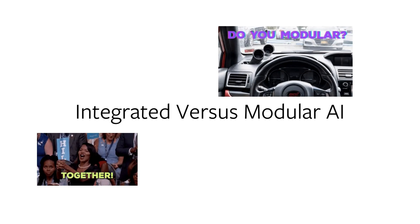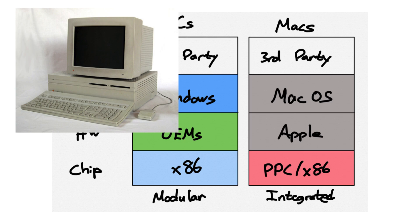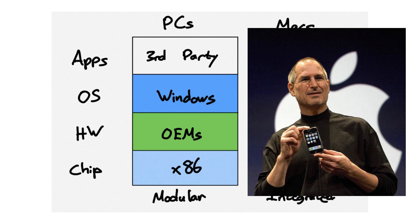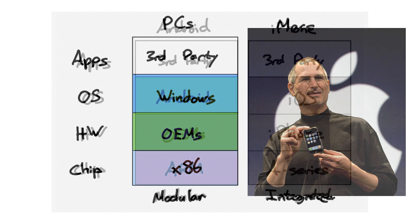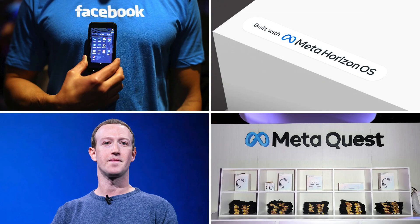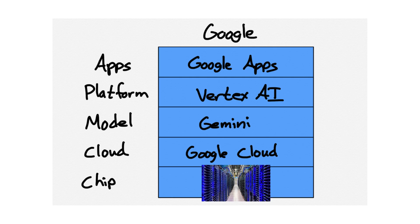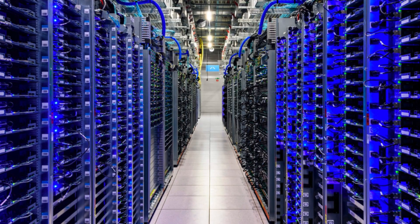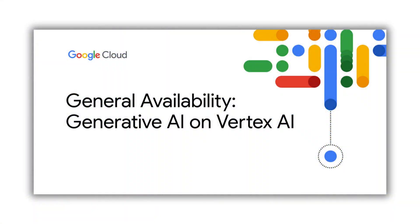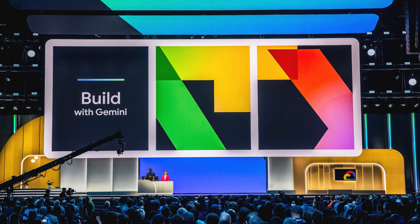Integrated vs. Modular AI. The integrated vs. modular dichotomy in PCs looked like this. Apple briefly experimented with modularization in the 1990s, and it nearly bankrupted them. Eventually, the company went in the opposite direction and integrated all the way down to the processor, following the path set by the iPhone. The similarities between these two images should be striking. Mark Zuckerberg is counting on the same pattern repeating itself for headset computers, with Meta as the open alternative. When it comes to AI, though, Google is, as Nadella noted, the integrated player.